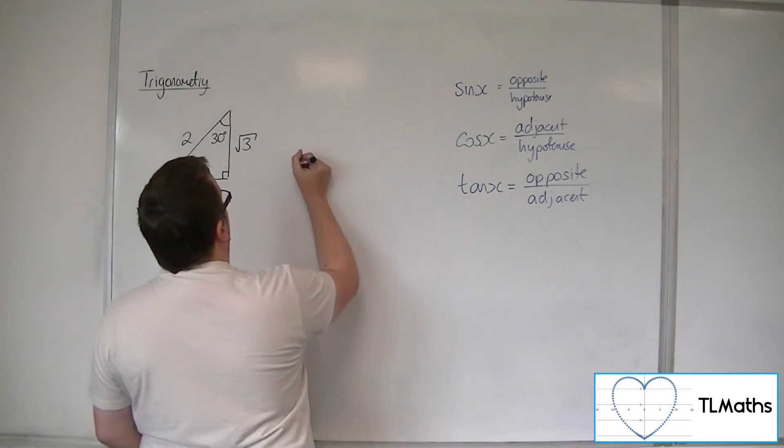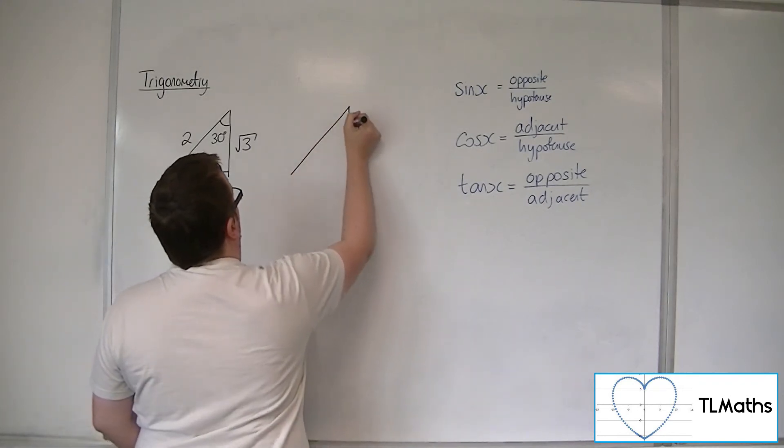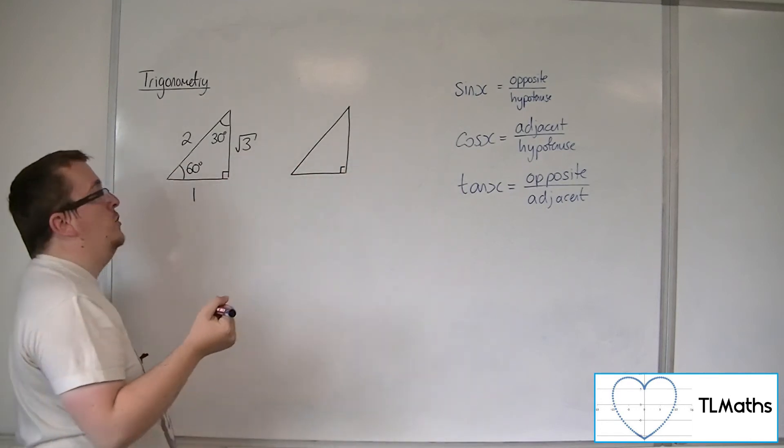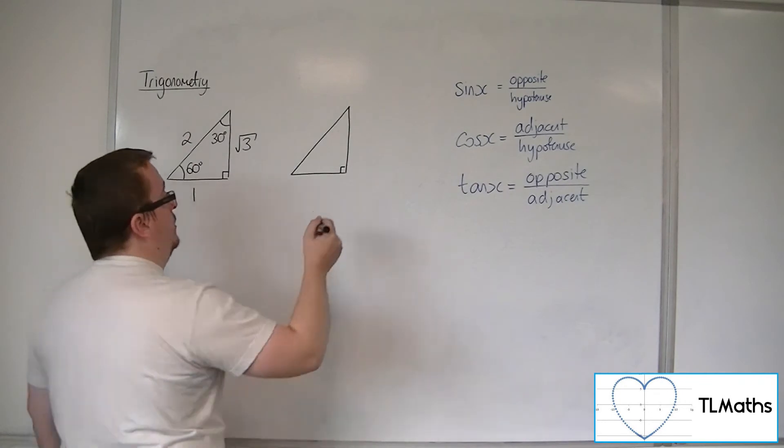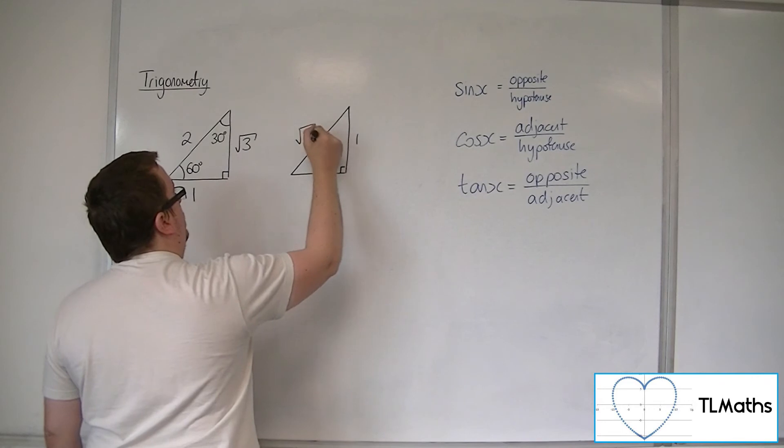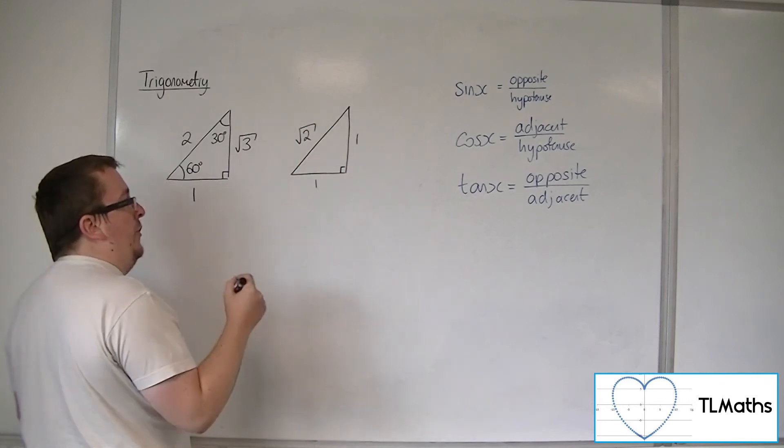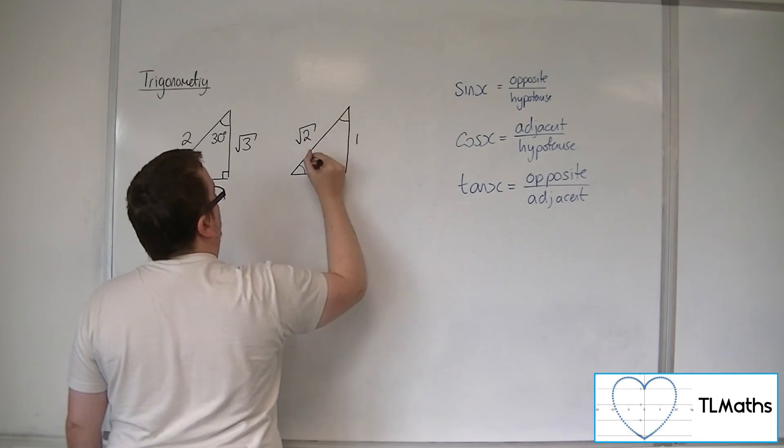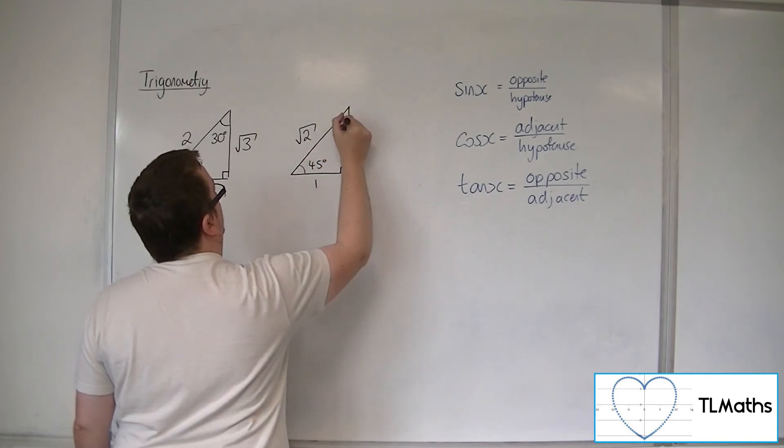Also, the second triangle looks like this. This second triangle is an isosceles triangle with base and height 1 and so its hypotenuse is root 2. And because it's isosceles right angle triangle, these two angles must be the same and they are both 45 degrees.